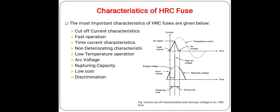When the transient current sum is zero, the arc is quenched. The cutoff and occurrence of striking voltage in an HRC fuse can be seen in the diagram. The arc voltage at the start may be several times the supply voltage, depending upon the length and cross-section of the fuse. The diagram shows the peak arc voltage at starting time.